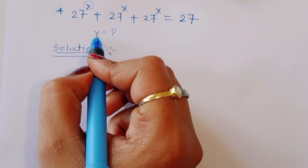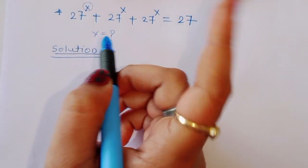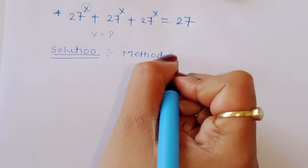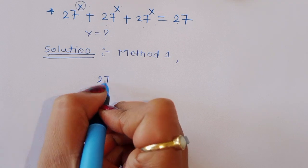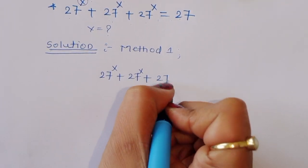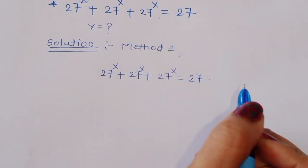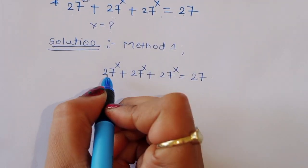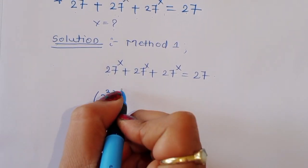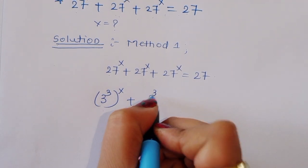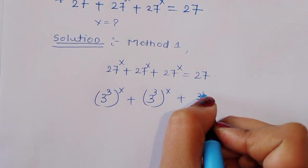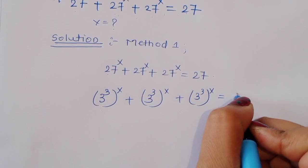We can find the value of x using two methods. Let's see Method 1. We have 27 raised to x plus 27 raised to x plus 27 raised to x equals 27. We can rewrite 27 as 3 cubed, so this becomes 3 raised to 3x plus 3 raised to 3x plus 3 raised to 3x equals 27.